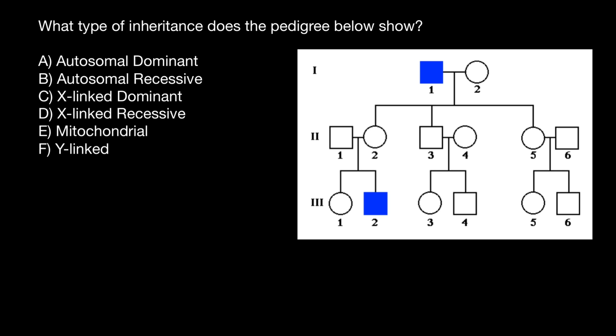That means that affected person number one has to have one defective X chromosome — not the whole chromosome, of course, but one allele on this chromosome — and a normal Y chromosome. His wife is phenotypically, and we assume genotypically, normal.